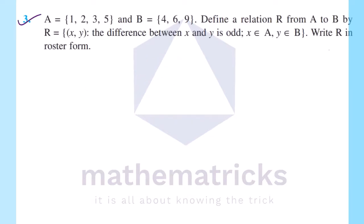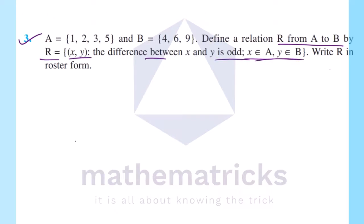Third question: A equals {1, 2, 3, 5} and B equals {4, 6, 9}. Define a relation R from A to B by R equals the set of all (x, y) such that the difference between x and y is odd, where x belongs to A and y belongs to B. Write R in roster form. We can define the relation using the set-builder formula.